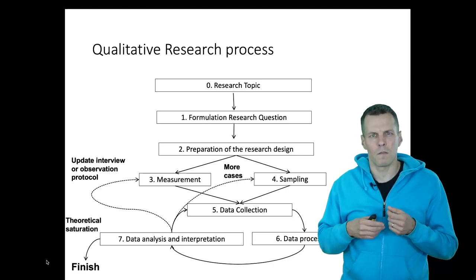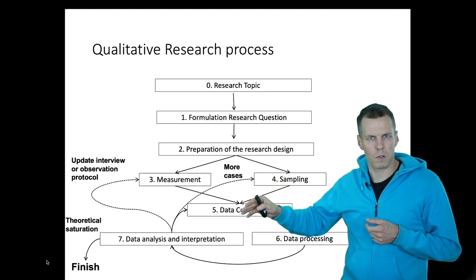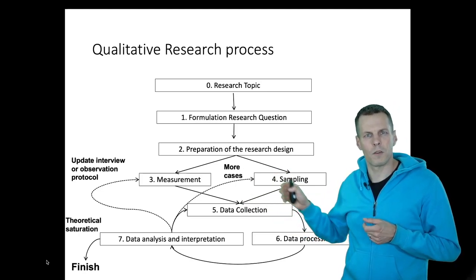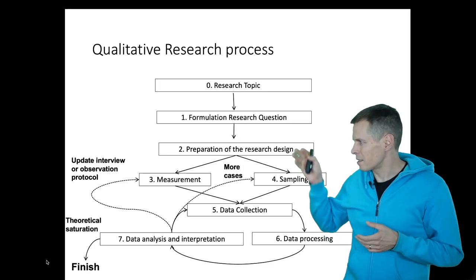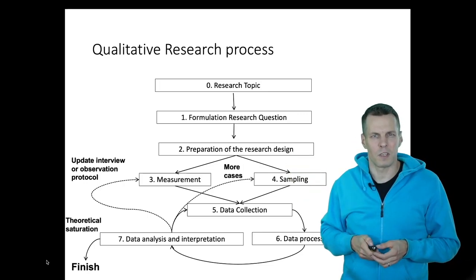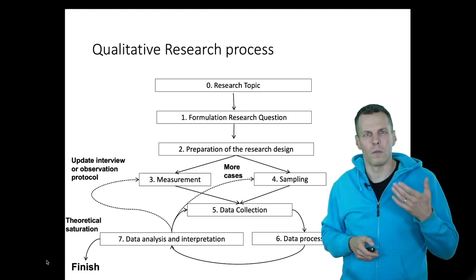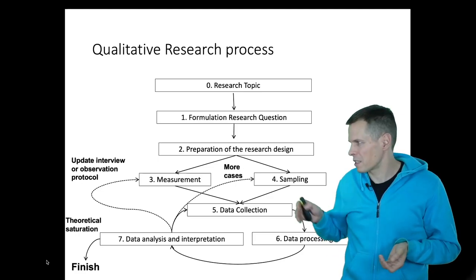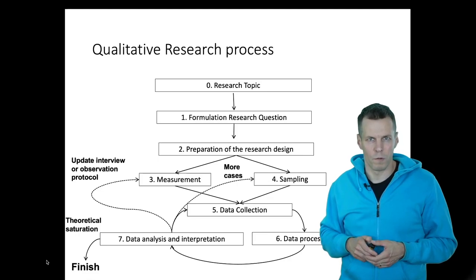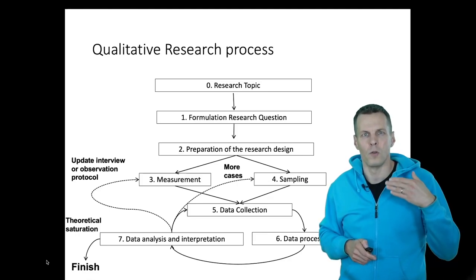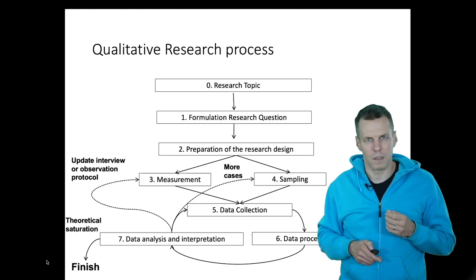Qualitative research is a much more iterative process than quantitative research. Quantitative research at least pretends to be sequential, but qualitative research doesn't even pretend to be. All manuals of qualitative research explain that it involves a lot of iteration, and for a good reason — because you never know what the result is going to be when you start a qualitative study.